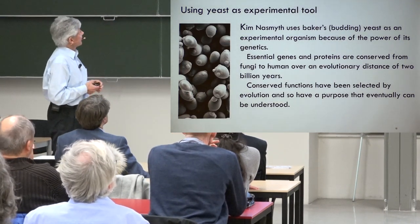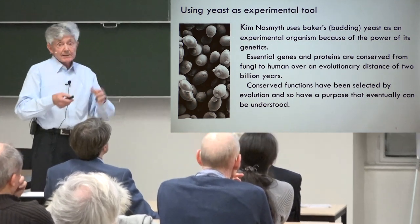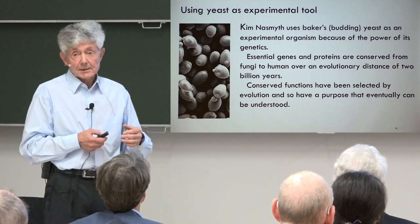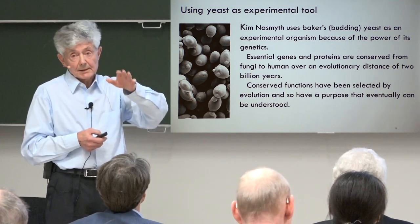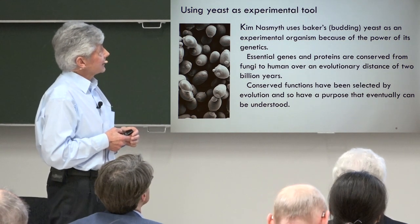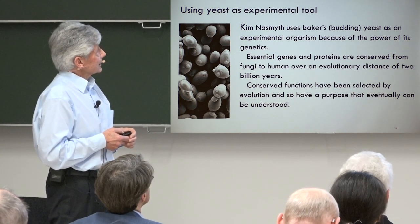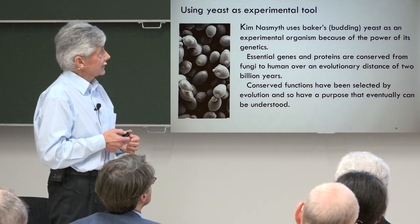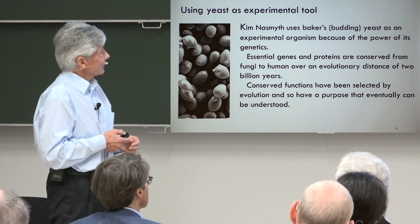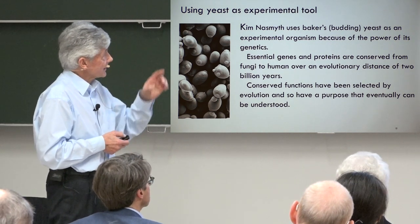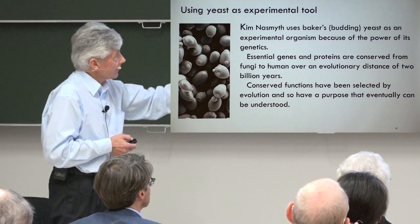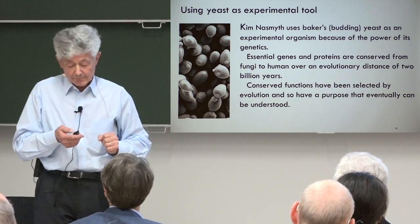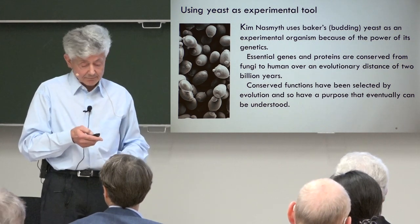Kim uses yeast mainly as his experimental system — first fission yeast, then baker's budding yeast. Genes and proteins are conserved from fungi to humans over an evolutionary distance of two billion years. Conserved functions have been selected by evolution and so have a purpose that can eventually be understood. This is very important to Kim — that things must have a purpose.